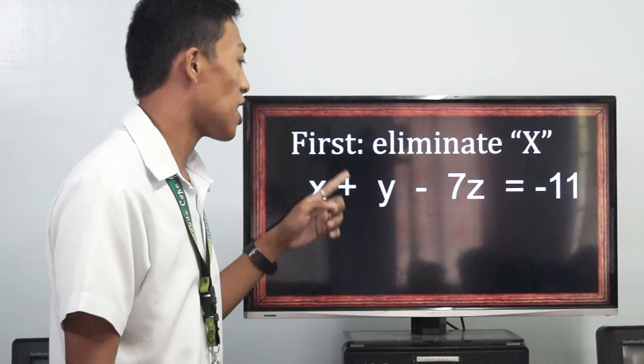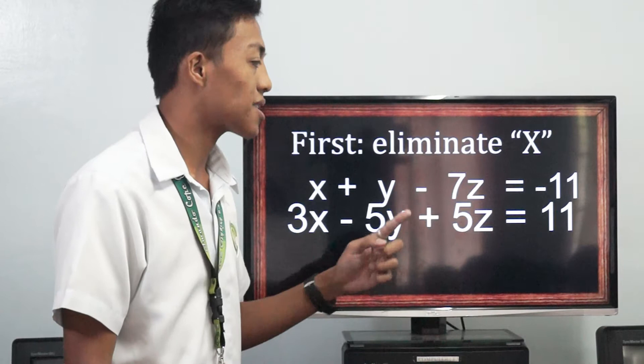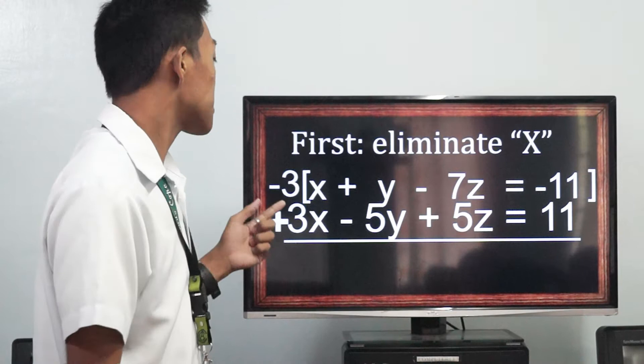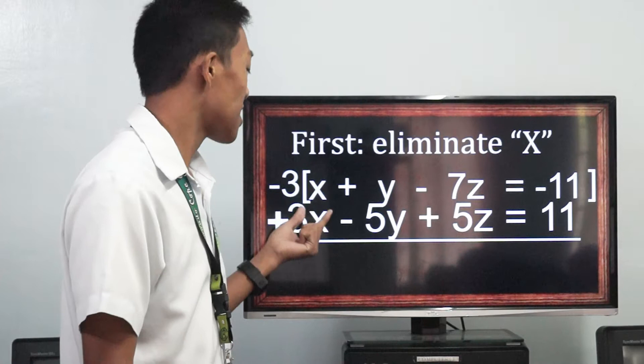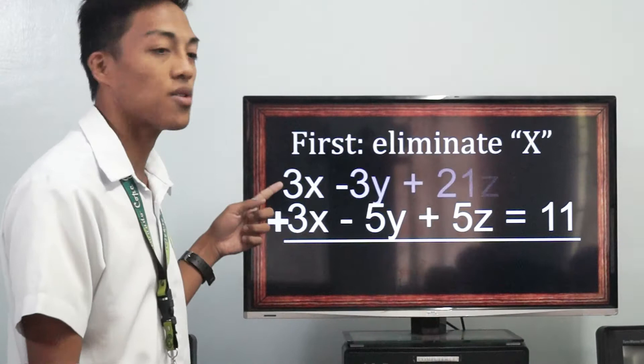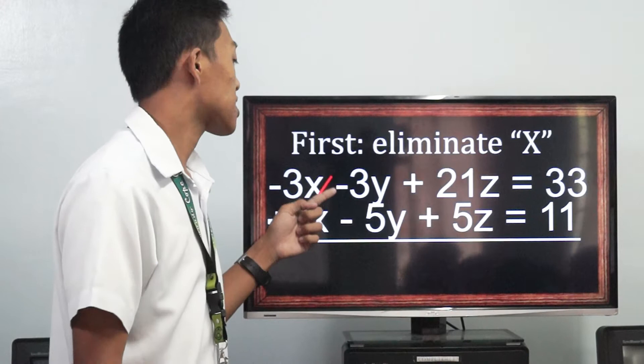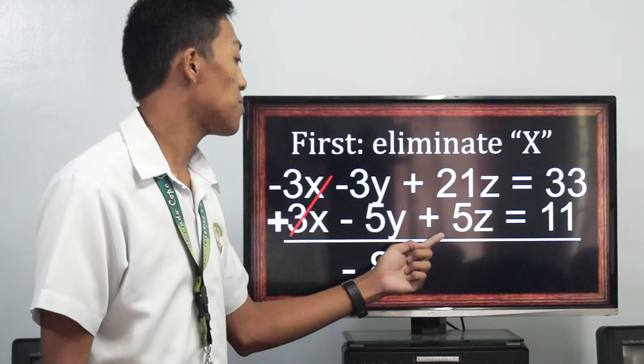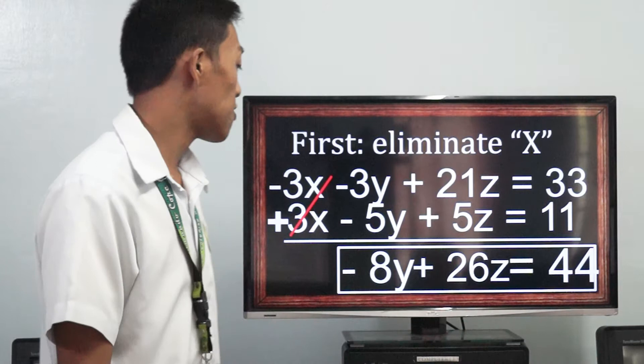Let's eliminate x from the first and third equations. First equation: x plus y minus 7z equals negative 11. Third equation: 3x minus 5y plus 5z equals 11. Let's multiply the first equation by negative 3 and distribute: negative 3 times x equals negative 3x, negative 3 times y equals negative 3y, negative 3 times negative 7z equals positive 21z, and negative 3 times negative 11 equals 33. This is our new equation. Let's eliminate negative 3x and 3x and proceed to addition. The result gives us our fifth equation: negative 8y plus 26z equals 44.